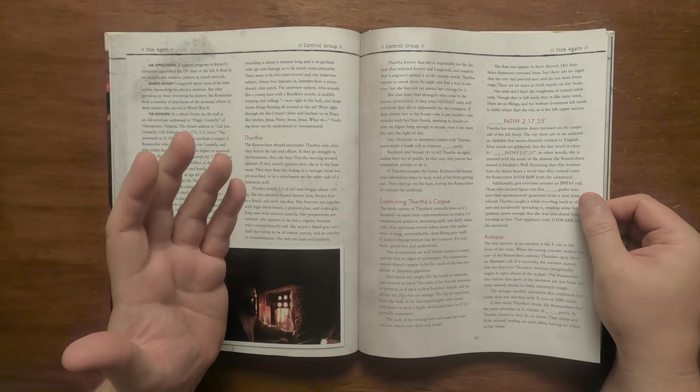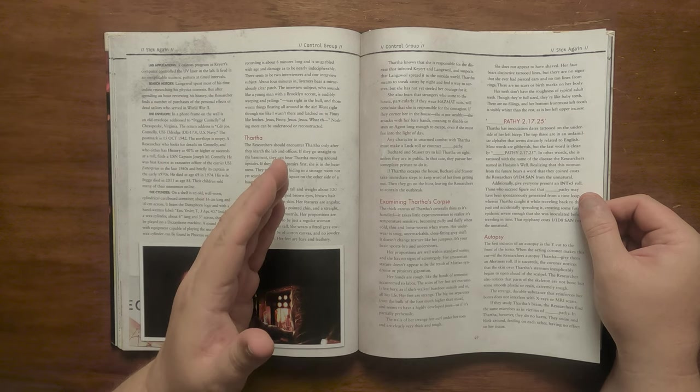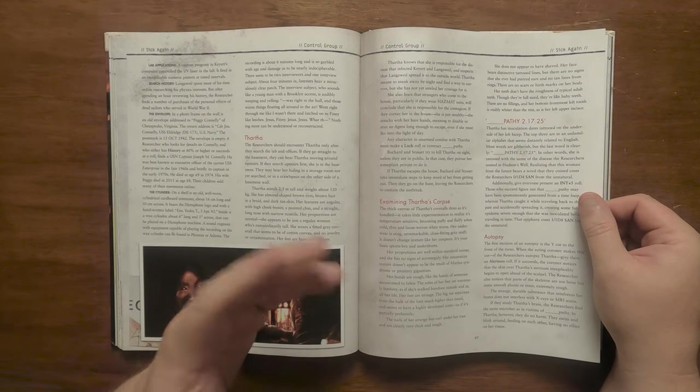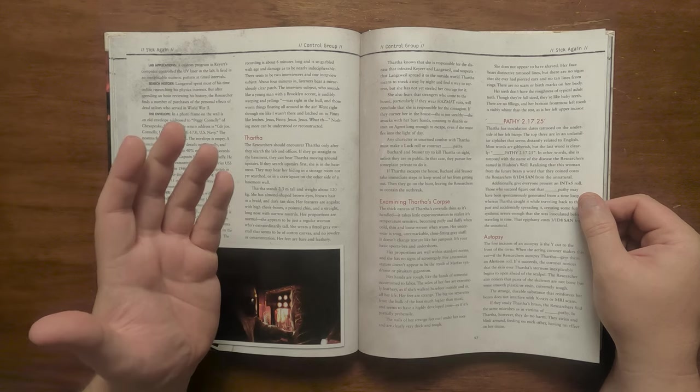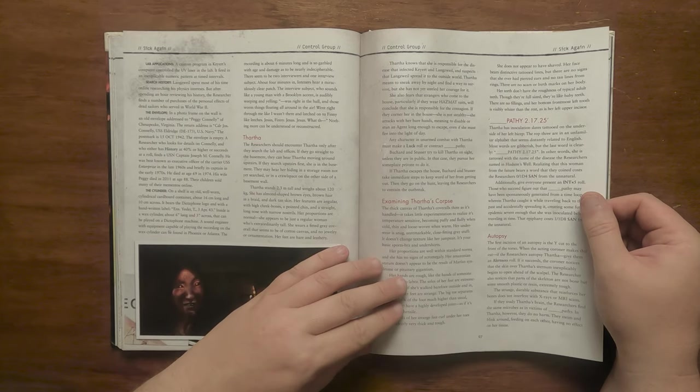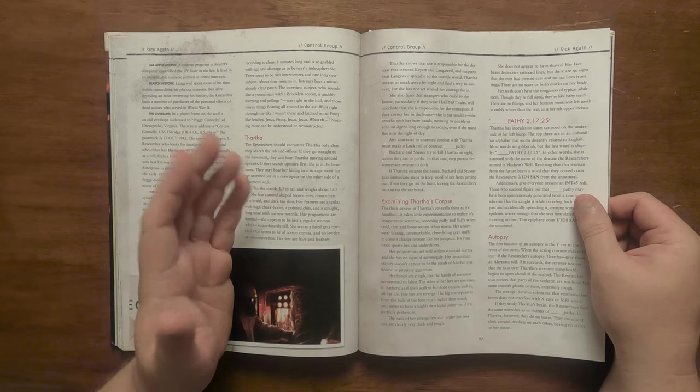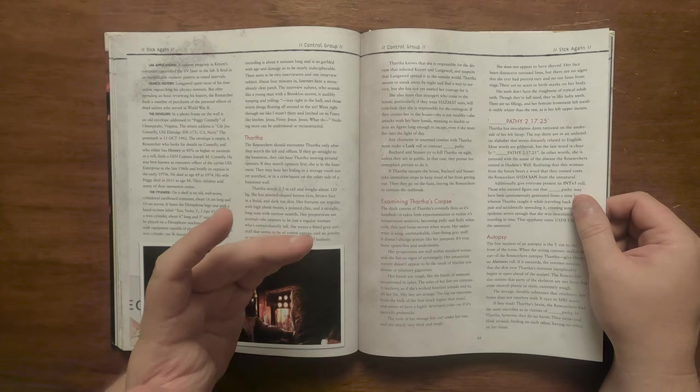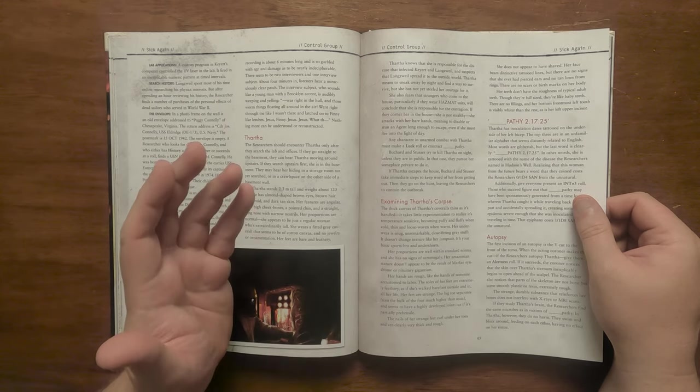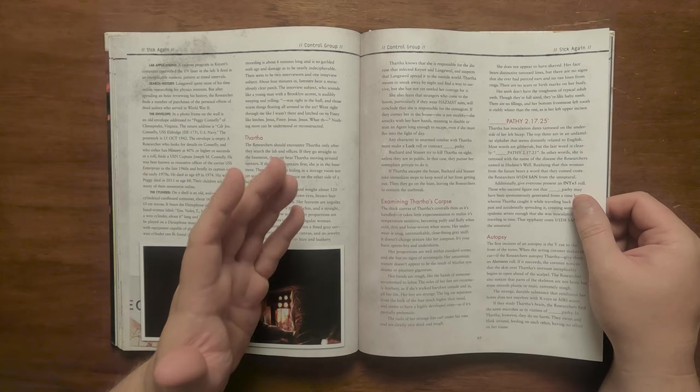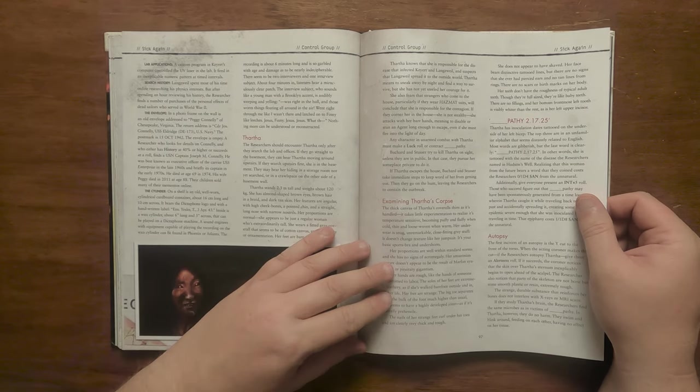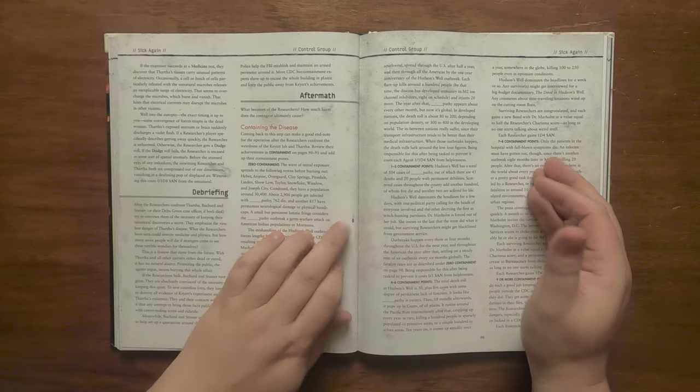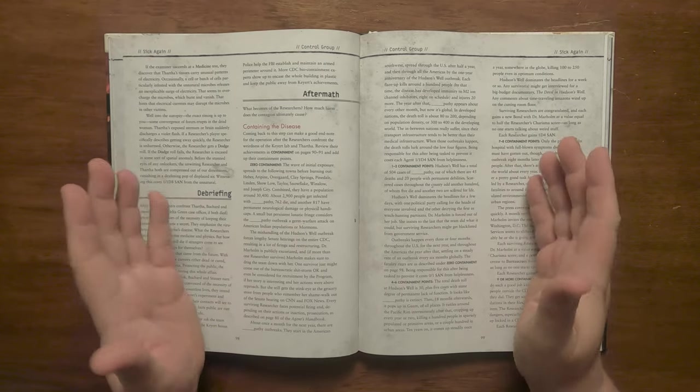If an int times 5 is rolled, the researchers can understand that the disease looks to have been generated from the time loop, creating an epidemic strong enough that she was inoculated before time travelling. This causes a further bigger sand hit. If an autopsy is performed, an alertness roll notices that the skin opens up spontaneously before the scalpel can cut it and then some of the bones are made from a kind of extremely tough plastic or resin. It appears to reinforce the bones and doesn't interfere with scans. If her brain is studied, the microbes are present there, however they do no harm and swim and blink about having no effect on the tissue. It can be discovered that her tissue carries strange patterns of electricity that occasionally surge on areas that have infestations of microbes giving a further hint that it's electricity that is the best treatment.